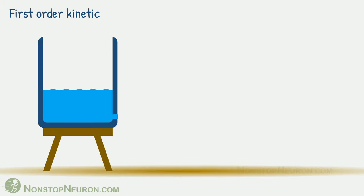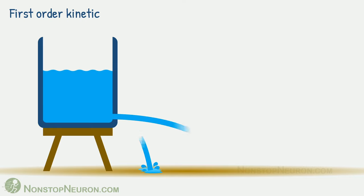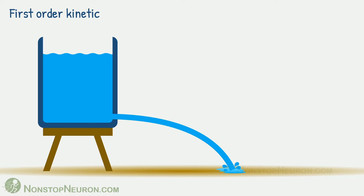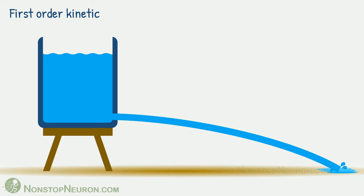First order kinetics is like water moving out of a hole at the bottom of a container. If the water level in the container increases, the volume of water coming out of the hole also increases. There is no limit to how much water can move out in a given time. With increasing volume of water in the container, the rate of water flow also increases.